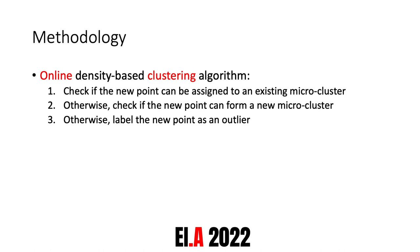The online clustering algorithm is an extension of a density-based clustering algorithm. First, we check if a new point can be assigned to an existing microcluster by computing the Euclidean distance between the new point and the points belonging to that microcluster. If this condition is not satisfied, we check if the new point can form a new microcluster by itself, by checking if there are enough neighboring unassigned points around it. If also this second condition is not satisfied, we label the new point as an outlier, to be analyzed in subsequent iterations.